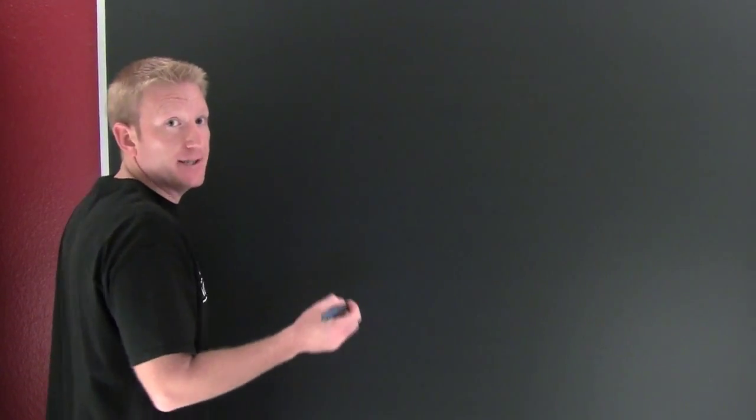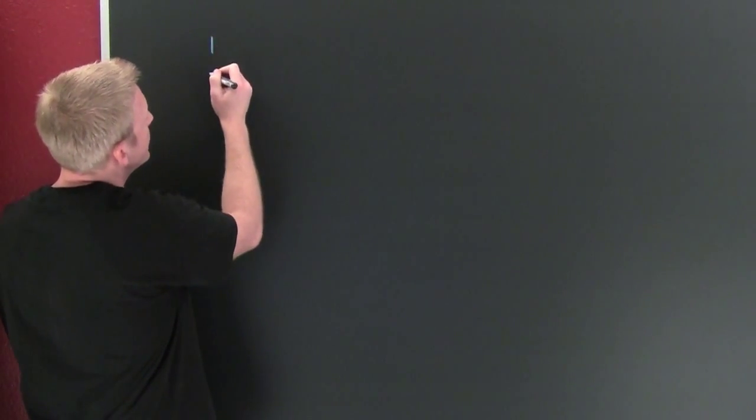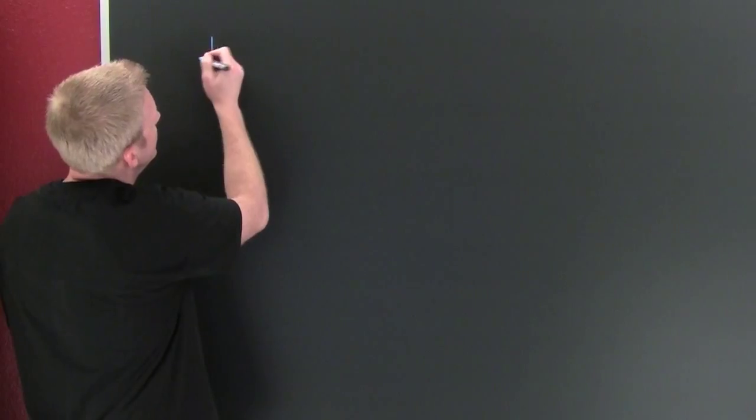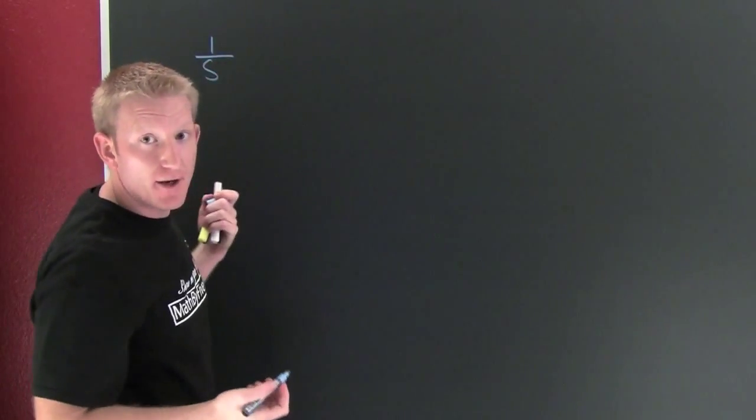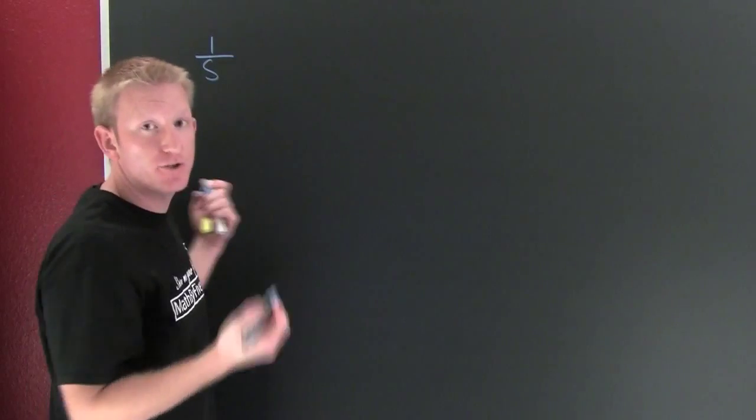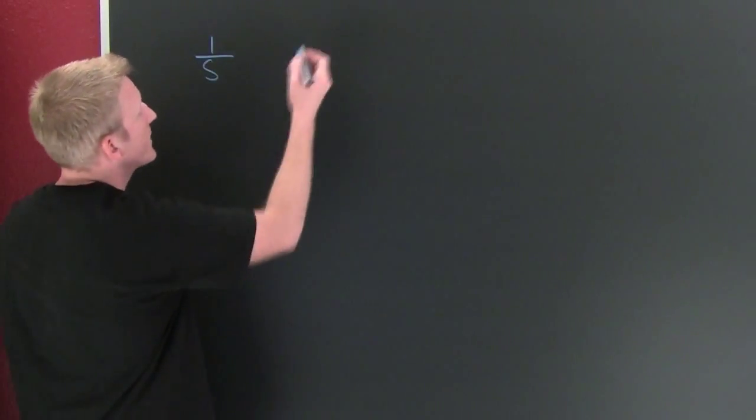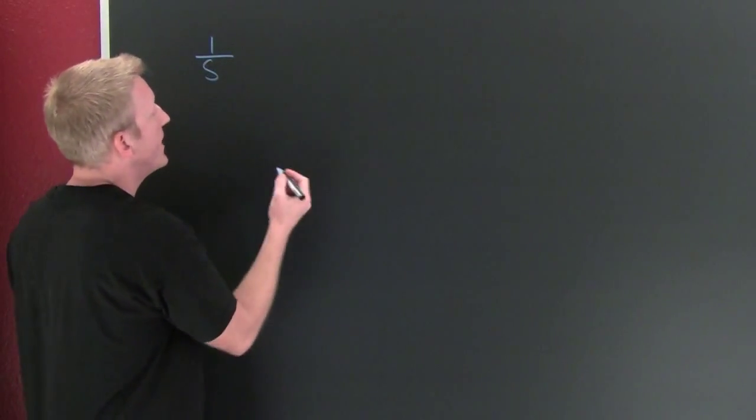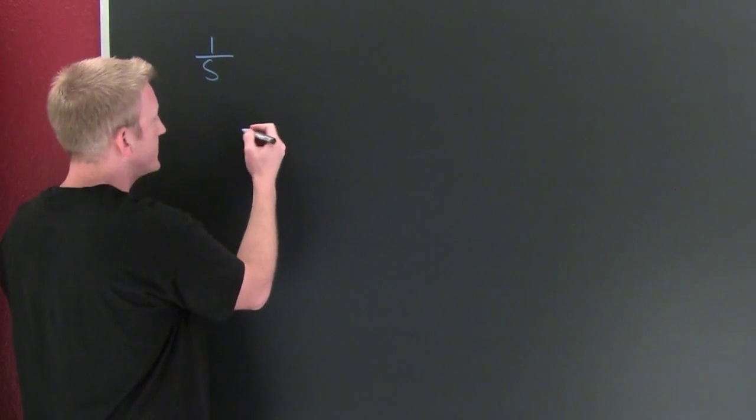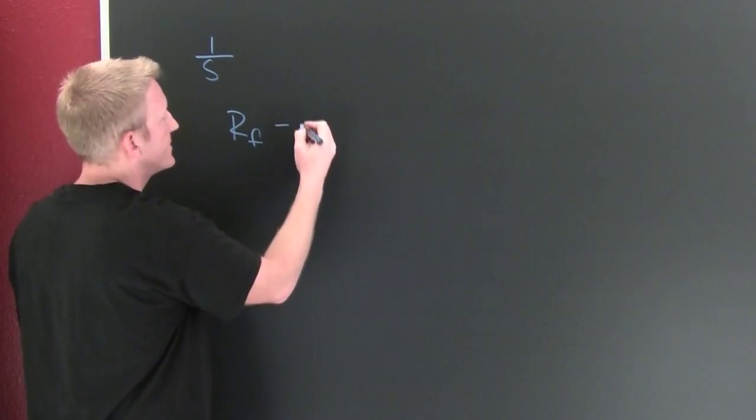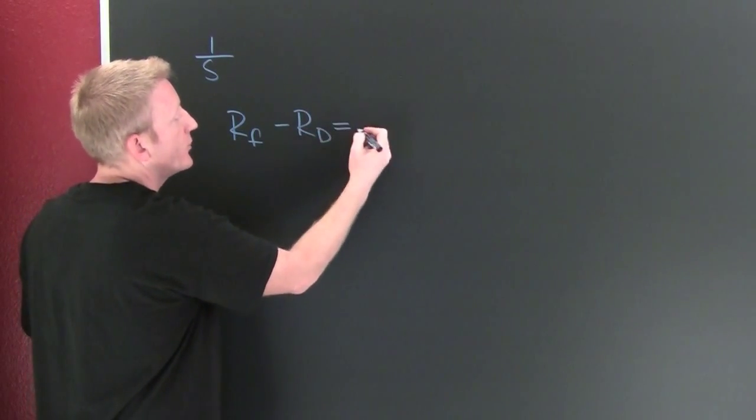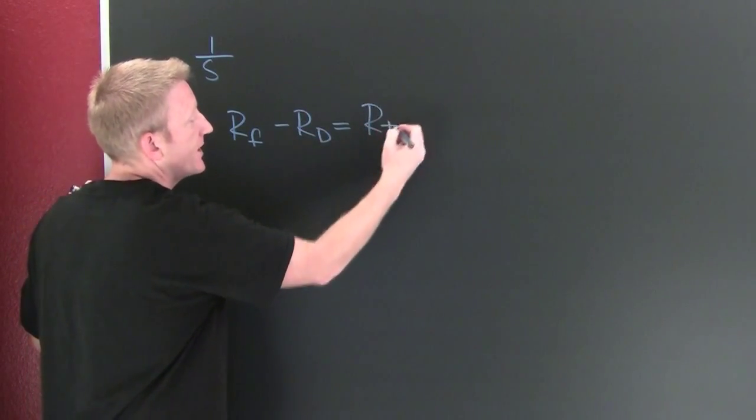We first need to set up our rate. One sink in seconds. We're talking about sinks per second. We're talking about jobs per time. So I know that my rate fill minus my rate drain is going to be the rate together.